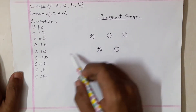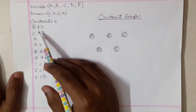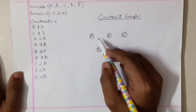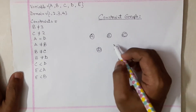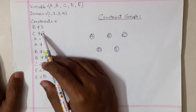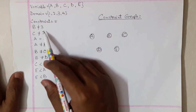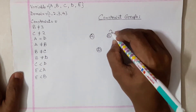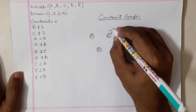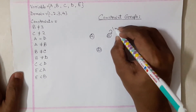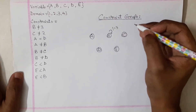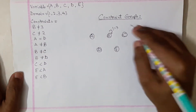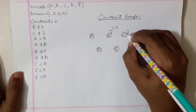Now you're just going to connect them using the constraints. The first one is b not equals three. You're not going to connect this with other nodes because this is a self-constraint — b can't be three — so you just make a small self-loop and write down 'not equals three'.